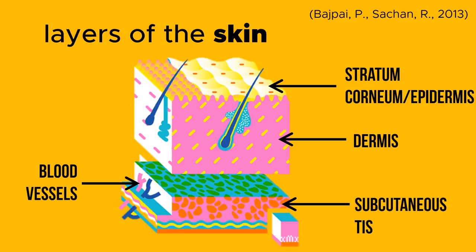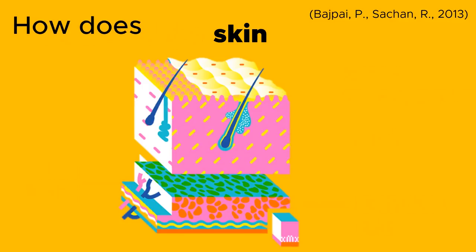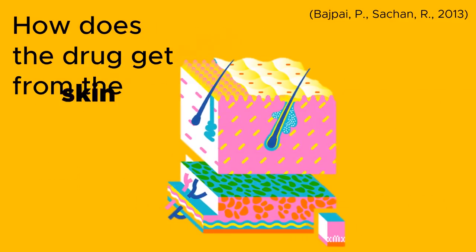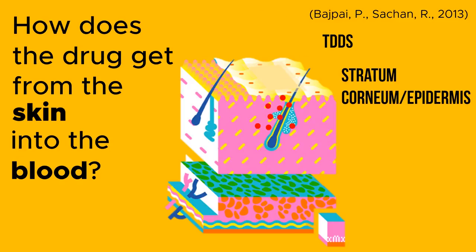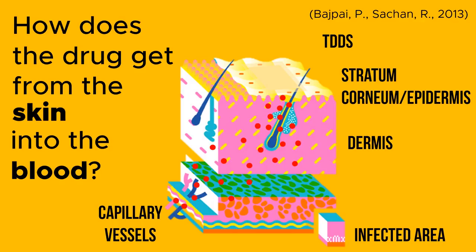How does the drug get from the skin into the blood? Once the TDDS is applied to the skin, the drug is released and travels to the stratum corneum, then to the dermis, then migrates to the capillary vessels and into the affected area.